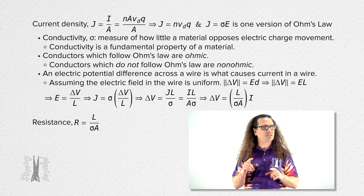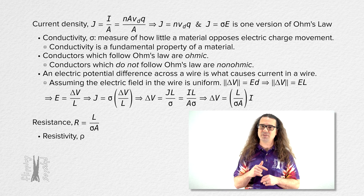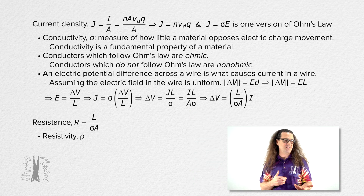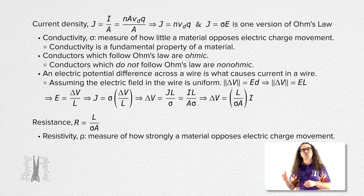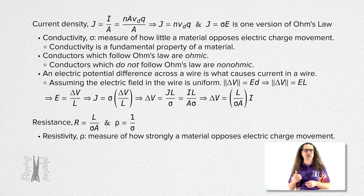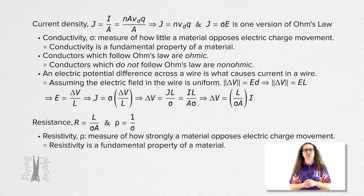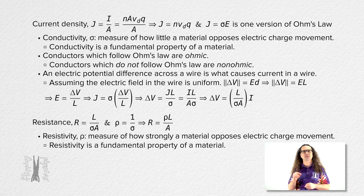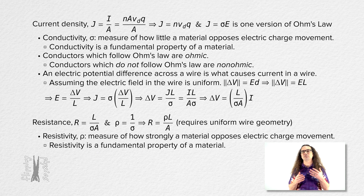Typically, resistance is defined in terms of resistivity rather than conductivity. Resistivity is a measure of how strongly a material opposes the movement of charges, making resistivity the inverse of conductivity. Just like conductivity, resistivity is a fundamental property of a material. In other words, the resistance of a wire equals the resistivity of the wire material times the length of the wire divided by the cross-sectional area of the wire. This equation requires that the wire have uniform geometry — that is, the cross-sectional area must be constant over the entire length of the wire.